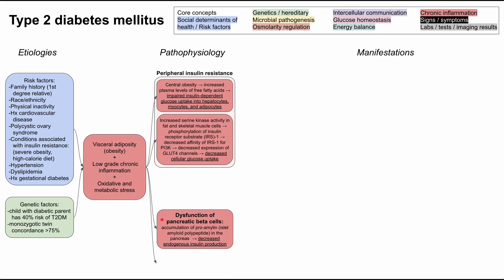For peripheral insulin resistance: when you have central adiposity, you have increased plasma levels of free fatty acids, which results in impaired insulin-dependent glucose uptake in hepatocytes, myocytes, and adipocytes. Additionally, increased serine kinase activity in fat and skeletal muscle cells results in phosphorylation of insulin receptor substrate IRS-1 and decreased affinity of IRS-1 for PI3K. This results in decreased expression of GLUT channels — specifically GLUT-4 — causing decreased cellular glucose uptake. Fewer GLUT-4 channels means less glucose can enter cells, contributing to peripheral insulin resistance.